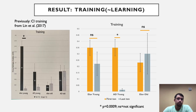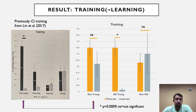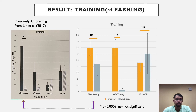The bar graph on the left was produced by Lynn et al.'s group in 2017, and the data corresponds with ours. Within the first and last 10 minutes, the courtship index is higher in the first than the last for our ELOV young group and our AD young group. Our ELOV old group shows the same trend where the last 10 minutes is higher than the first 10 minutes.